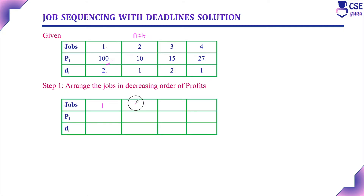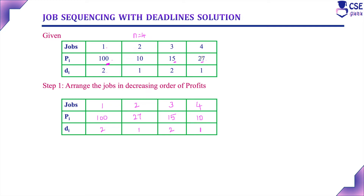So the jobs arranged in decreasing order of profit are: Job 1 with profit 100 and deadline 2; Job 4 with profit 27 and deadline 1; Job 3 with profit 15 and deadline 2; and Job 2 with profit 10 and deadline 1. We have now arranged all jobs in decreasing order of profit.